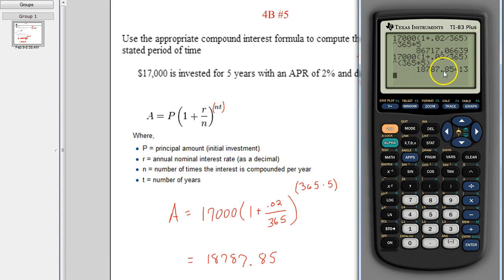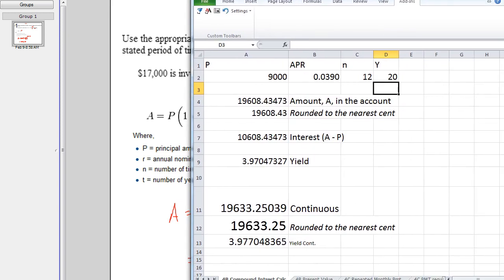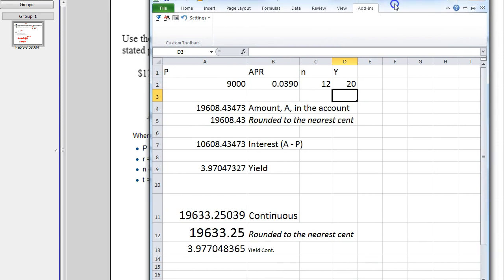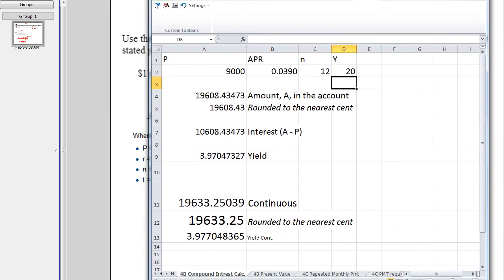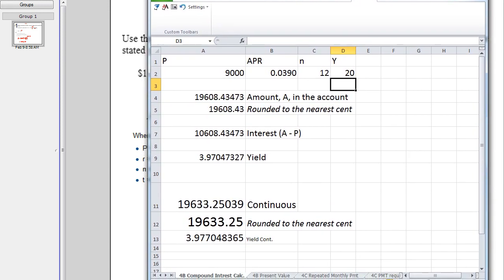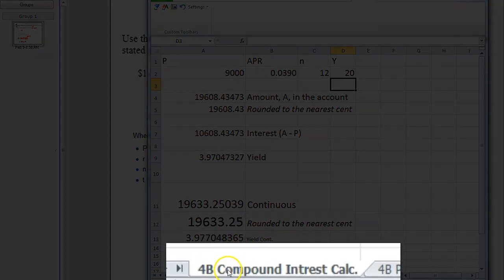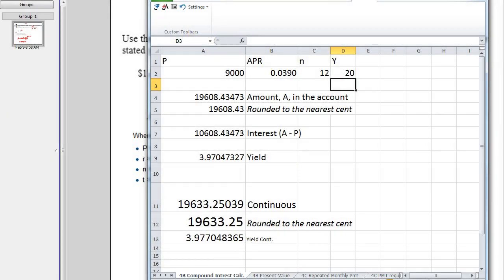So there's the 18,787.85. Now let me show you also, this is something that you can download in this section. This is compound interest calculators is what I've got it named, but it's all the different calculators you might need for chapter 4. In particular, one of them is 4B compound interest calculators.